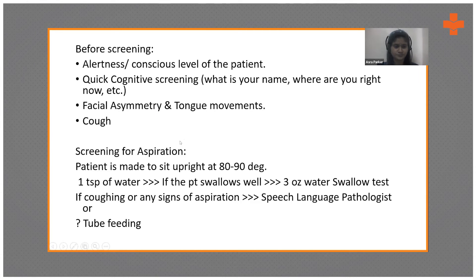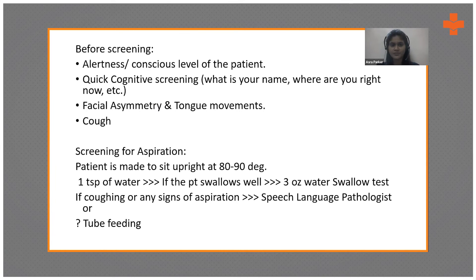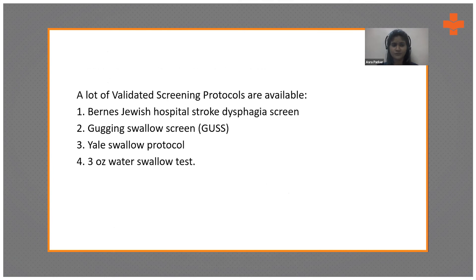If everything is fine, swallow screening for aspiration can be initiated. The patient is seated upright at 80–90 degrees and given one tablespoon of water. If swallowed well with no signs of dysphagia, a three-ounce water swallow test is conducted. If coughing or signs of aspiration are present, refer to a speech language pathologist or consider tube feeding. Validated protocols include the Yale Swallow Protocol, the Gugging Swallowing Screen, and the Three-Ounce Water Swallow Test.